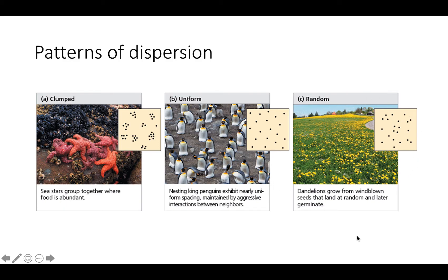Random distribution is like seeds that randomly get blown around — wherever they land is where they grow. There's no real reason for why they grow in a particular pattern; they just grow wherever, making it a random distribution pattern.